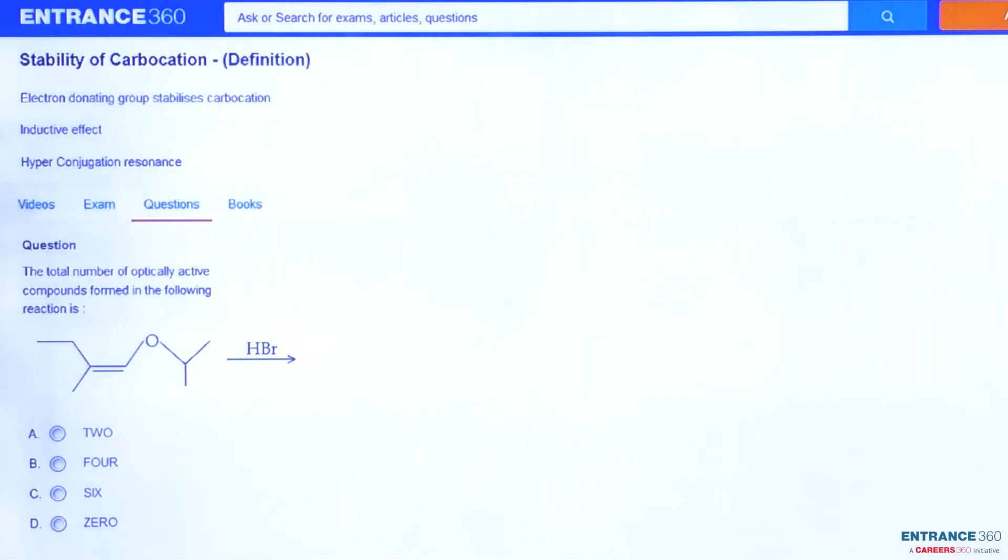Hello students, today we are going to discuss a very important question from the basic principles of organic chemistry chapter. This question was asked in JEE 2018. Now let's have a look at the question. We have to find the total number of optically active compounds after the reaction, or the products. Now let's solve this question.